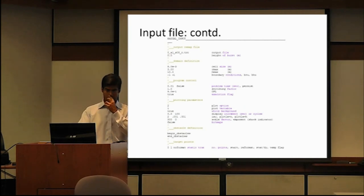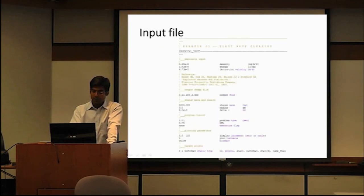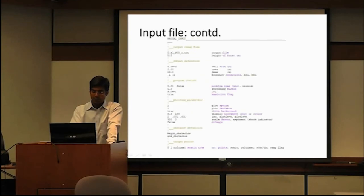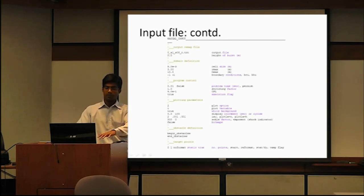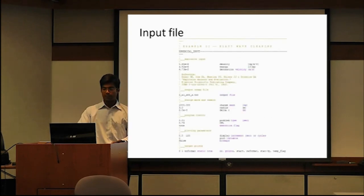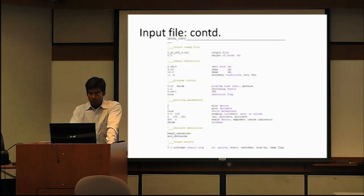Now let's go to the 2D analysis. We've already provided all information regarding charge weight. The output file has subscript R signifying radial input/output. This is the height-of-burst problem — because our charge weight is at the surface, the height of burst is 0.0.